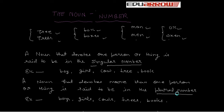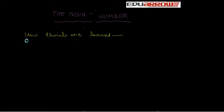Now, we will learn how plurals are formed. First, the plural of nouns is generally formed by adding S. Example: Boy, boys; Girl, girls; Tree, trees.